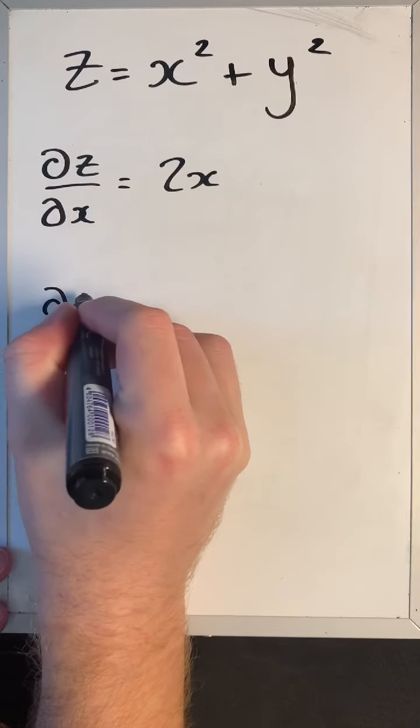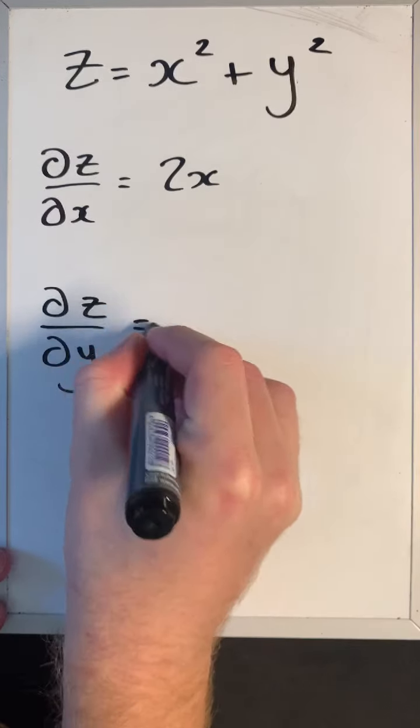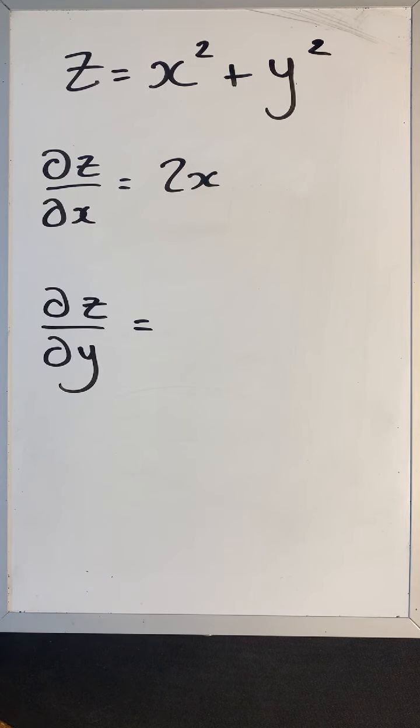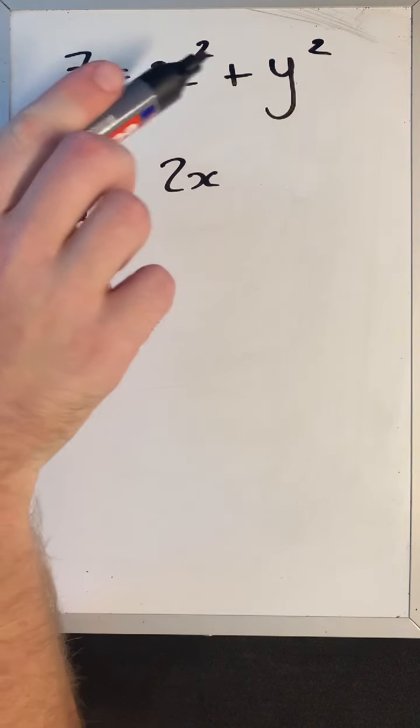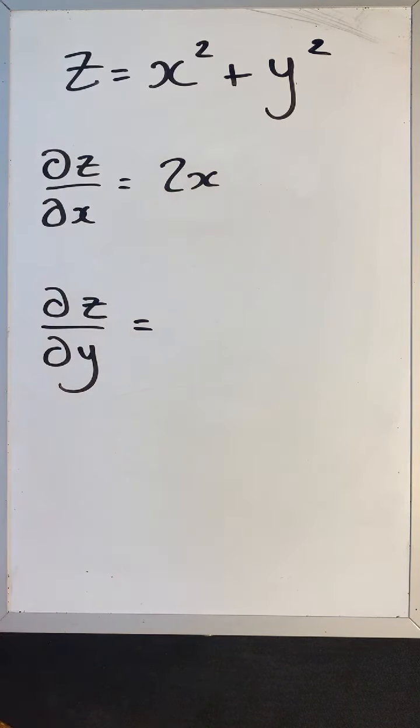For ∂z/∂y: x² is a constant not multiplied by any y's, so it goes to zero. Differentiating y² with respect to y gives 2y. So ∂z/∂y = 2y. Always be careful when you've got x's and y's on their own — they tend to cancel out when differentiating with respect to the other variable.